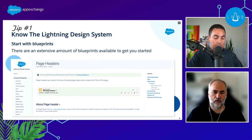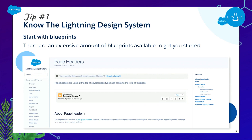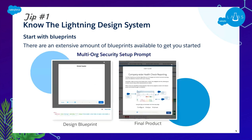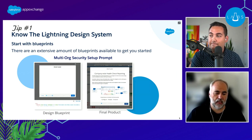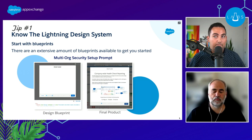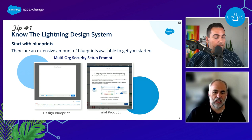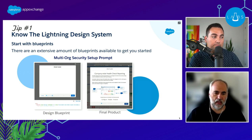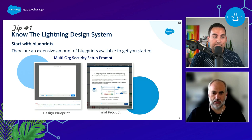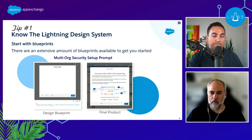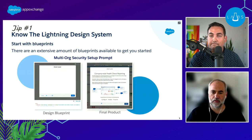Blueprints show you what a component looks like — for example, a page header — and provide code you can copy and paste into your component. There are different variants: record pages, object pages, different headers. As an example from our Multi-Org Security Summary, we needed to guide users through some functionality, so we used the modal header blueprint. We copied that code, dropped our pieces in where needed, and avoided heavy custom coding — getting a consistent UI that looks and feels like Salesforce without doing a lot of heavy lifting on CSS.